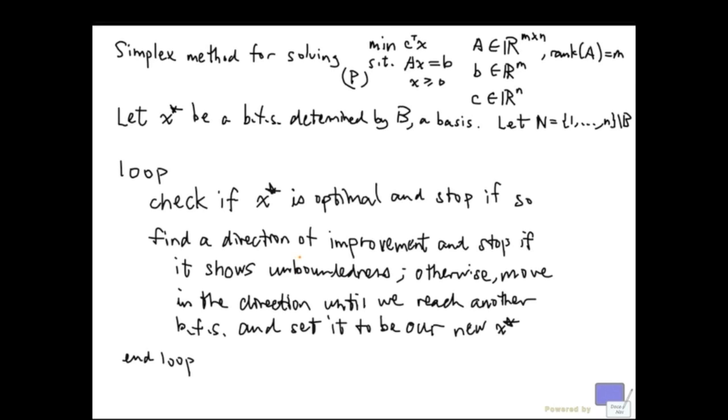If we can move in that direction indefinitely, then we can say that the problem is unbounded and we stop. Otherwise, we move in that direction and we'll eventually hit another basic feasible solution. And we'll set that solution to be our new x star and start over.